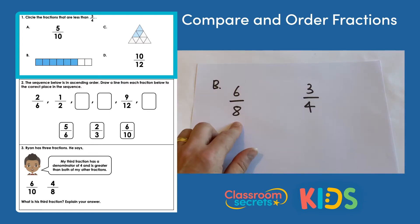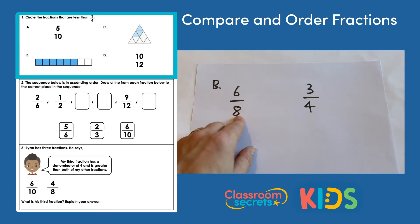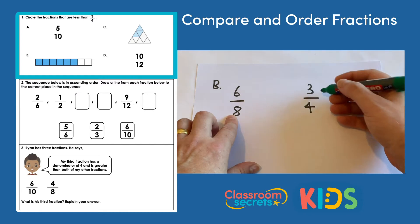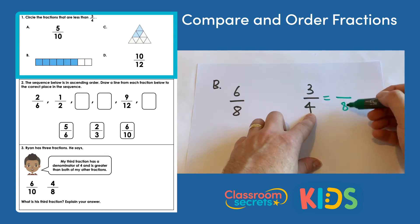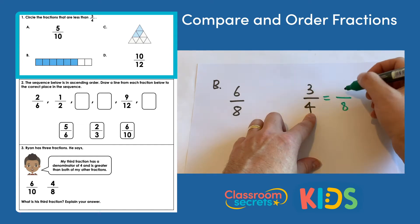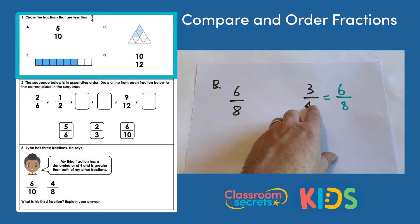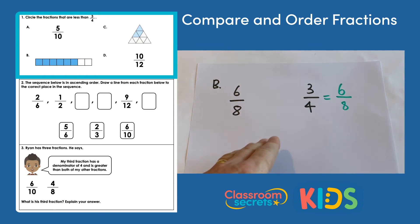B is six eighths, and we need to compare that to three quarters. The lowest common multiple of eight and four is eight, so we leave six eighths as it is. We convert three quarters into eighths by multiplying four by two to make eight, and three by two to get six. So three quarters equals six eighths — B is exactly the same as three quarters, not less than it, so we're not going to circle B.